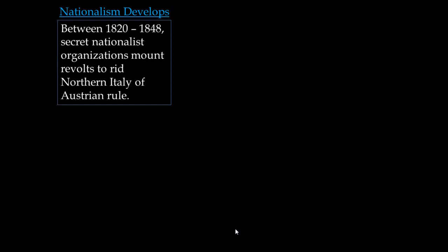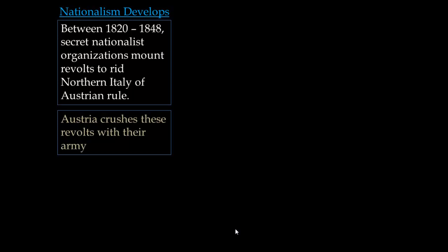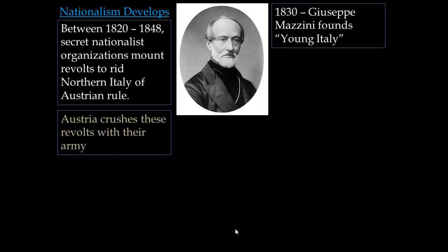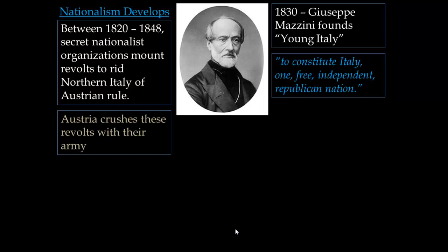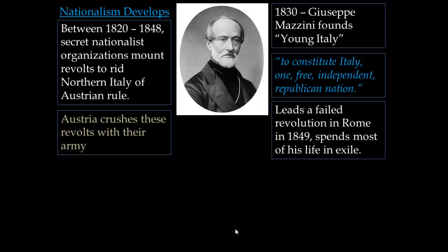Nationalism develops — the idea that Italian people want their own country. Between 1820 and 1848, secret nationalist organizations mount revolts in northern Italy to try to get rid of the Austrians. Every time, the Austrians send in their army and crush these revolts. In 1830, one of the first leaders of Italian revolutionary thought, Giuseppe Mazzini, founds a group called Young Italy. He believes in constituting one free, independent, republican nation. In 1849, he leads a failed revolt in Rome and spends the majority of his life in exile, dreaming of a unified Italy.